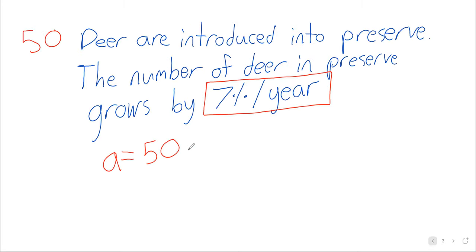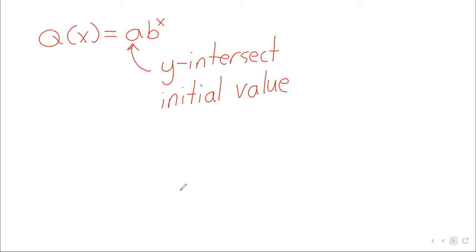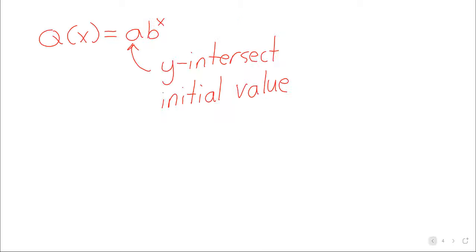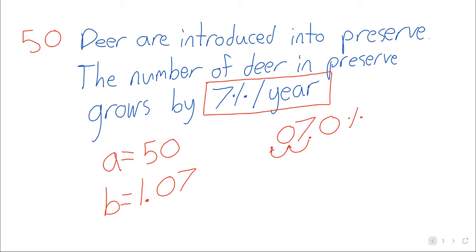Going to our deer example, we've got 7.0%. This moves twice to the left, and we get 0.07. B is therefore 1.07. Remember, what I have written here: B is 1 plus the percentage rate of change.